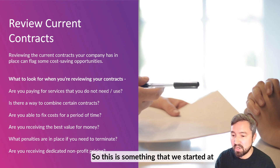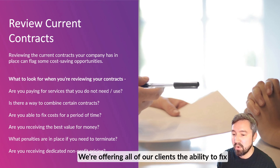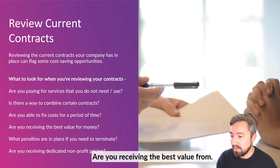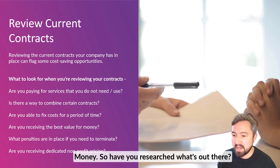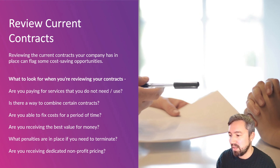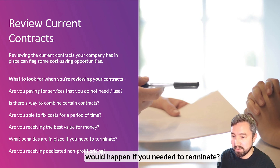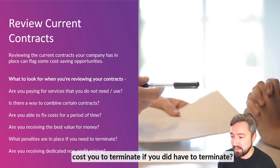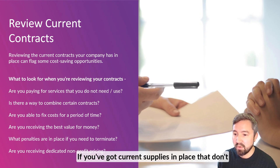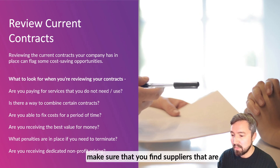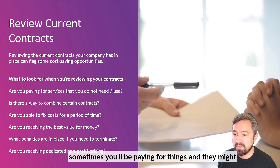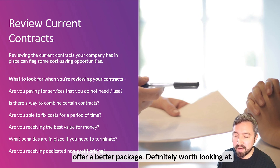Is there a way to combine certain contracts? Are you paying for your telephony separate from your IT, or your electricity separate from your gas? Is there a way to combine that together to save money? Are you able to fix costs for a period of time? We started offering our clients the ability to fix their current costs for two or three years at the beginning of 2022, because of rising inflation, to hopefully save them money in the long term. Are you receiving the best value for money — have you researched what's out there, do you know the competition, and are you paying competitive rates? What penalties have you got in place, and what would happen if you needed to terminate? Make sure you have a list of all your contracts, when they expire, the termination details, and how much it would cost to terminate. And are you receiving dedicated non-profit pricing? If your current suppliers don't offer it, make sure you find suppliers that do, or ask your existing suppliers if you're on the best non-profit tariffs — sometimes they might not realise you're a non-profit and might offer a better package.